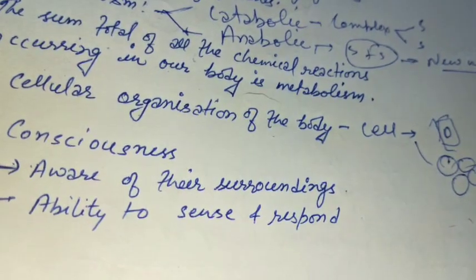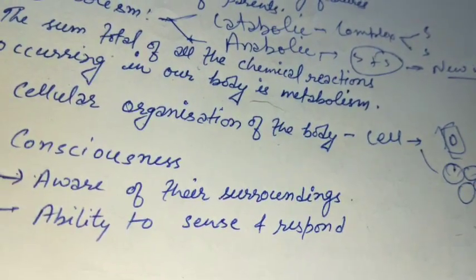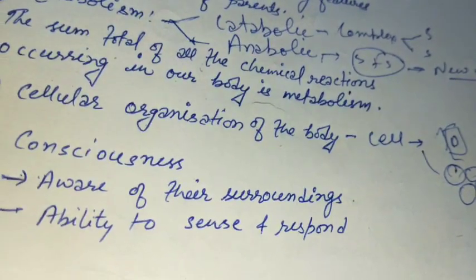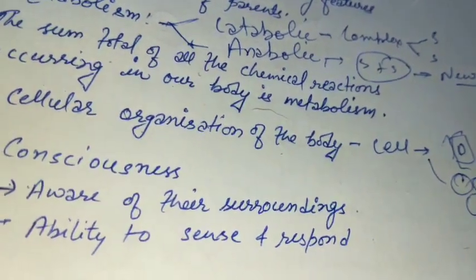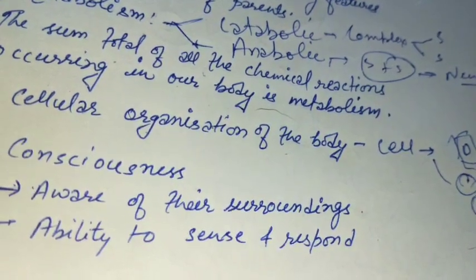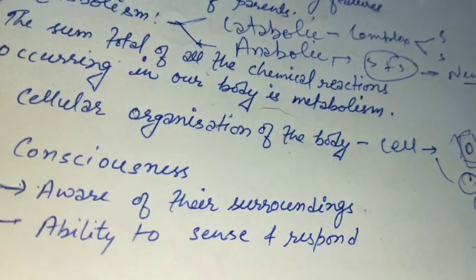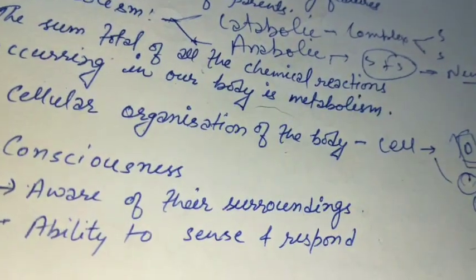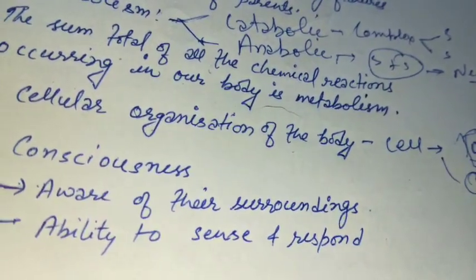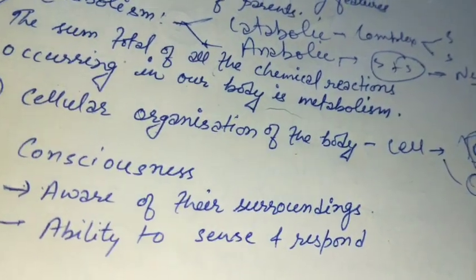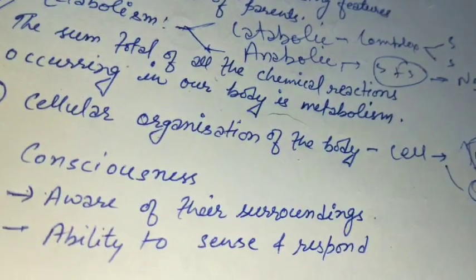Plants also respond to external factors like light. As you read in classes 9 and 10 about phototropic and photonastic movements, plants respond to light, and their roots grow towards water. Temperature and photoperiod also affect reproduction in seasonal breeders. All organisms are therefore aware of their surroundings.